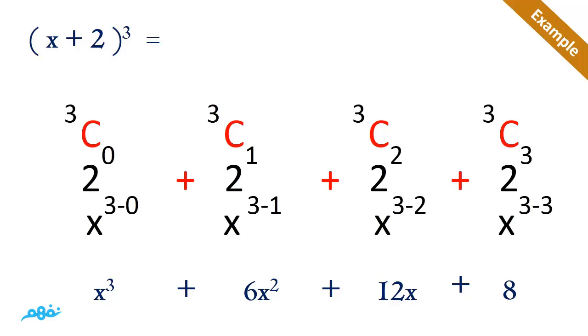Here 3C0 equals 1, 2 to the power 0 equals 1, x to the power 3 equals x cubed. And x cubed multiplied by 1 multiplied by 1 equals x cubed. And so on with the other terms, here we can get 6x squared, 12x, and 8 only.